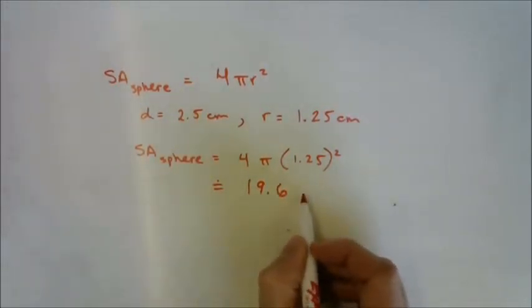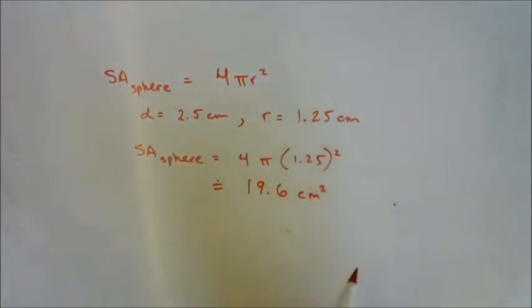Example number two: we're going to find the radius of a baseball. Determine the radius of a baseball that has a surface area of 215 square centimeters.